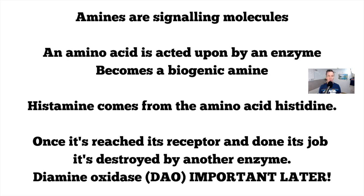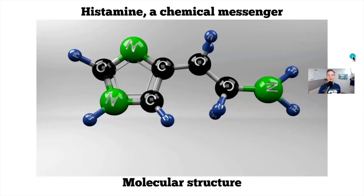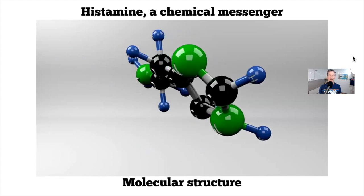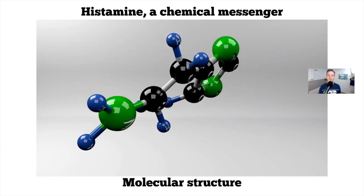Histamine reaches a receptor, does a job, and then the body has another enzyme called diamine oxidase — or DAO — which cleans it up. So your body produces histamine, it goes to a receptor site, does something, and when it's finished its job, it's cleaned up by that enzyme. Histamine is a chemical messenger.